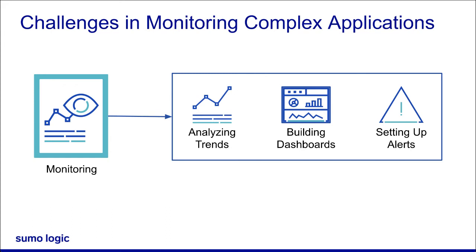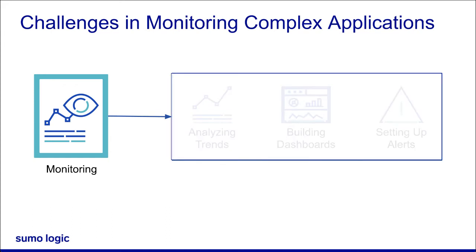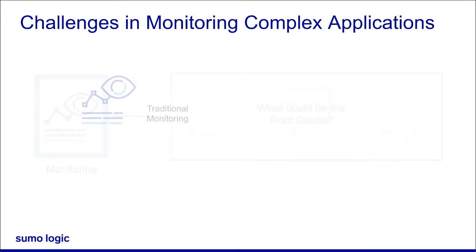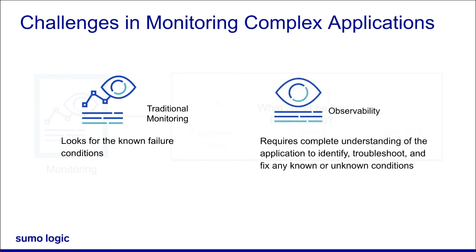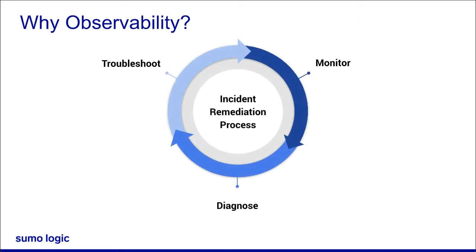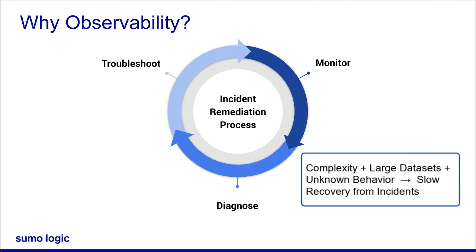These errors could also impact the system in obscure ways that could make it extremely challenging to get to the root cause. In a nutshell, traditional monitoring looks for known application failure conditions, whereas observability lets you completely understand the state of an application, which then allows you to identify, troubleshoot, and fix any known or unknown conditions. Monitoring, diagnosing, and troubleshooting unknown issues is harder because there are no existing runbooks that can help resolve issues quickly. The problem is compounded by the fact that modern applications also produce astonishing amounts of machine data across the application stack. All this complexity, along with the sheer volume of data and unknown behaviors, can make it impossible to recover from failures quickly. You need a way to make sense of all this information. That is why organizations need an observability solution.